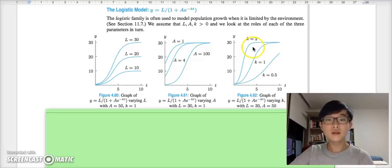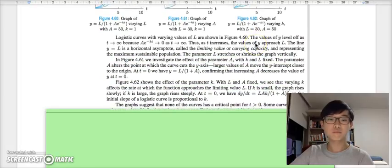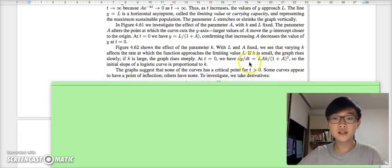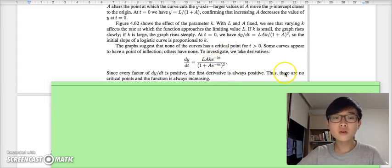Let's figure out which is which. The derivative of this function is this one, where both the upper part and the denominator are positive. Therefore, there are no critical points and the function is always increasing.